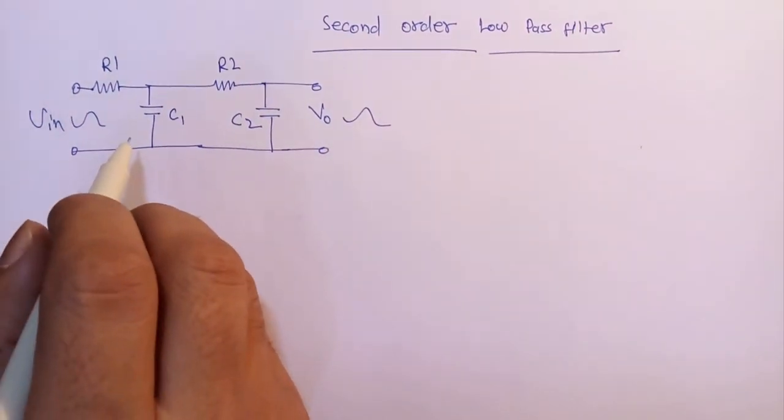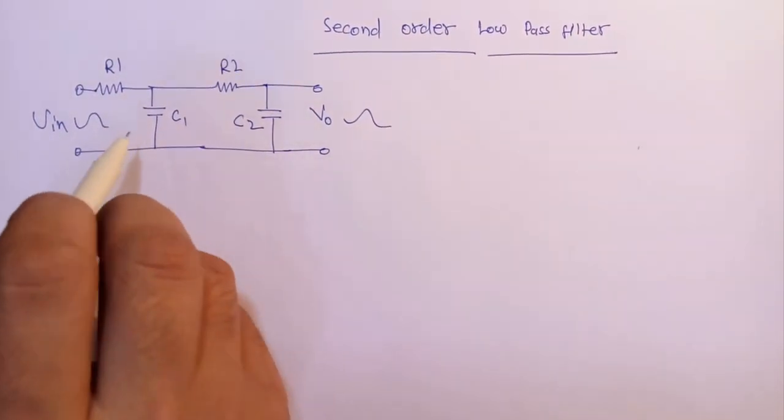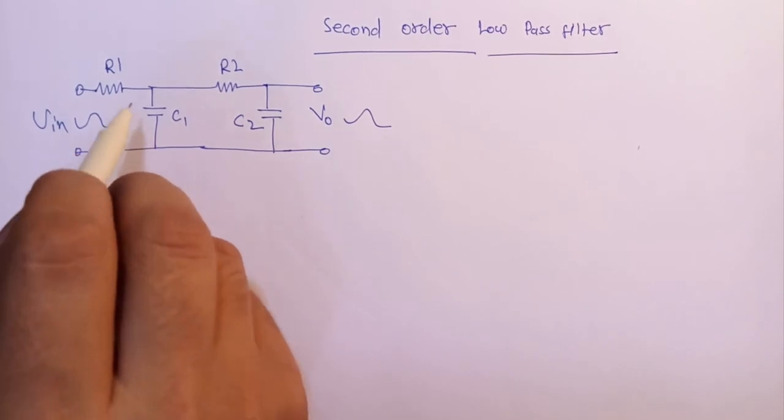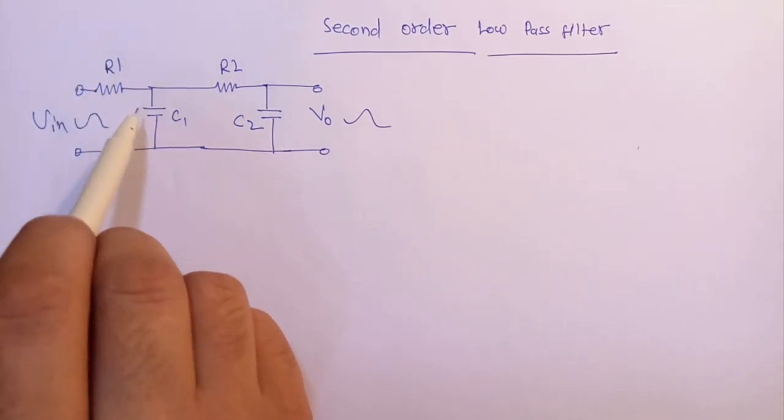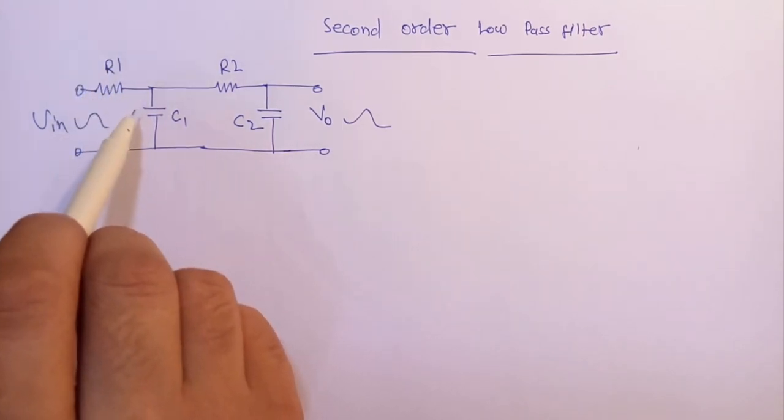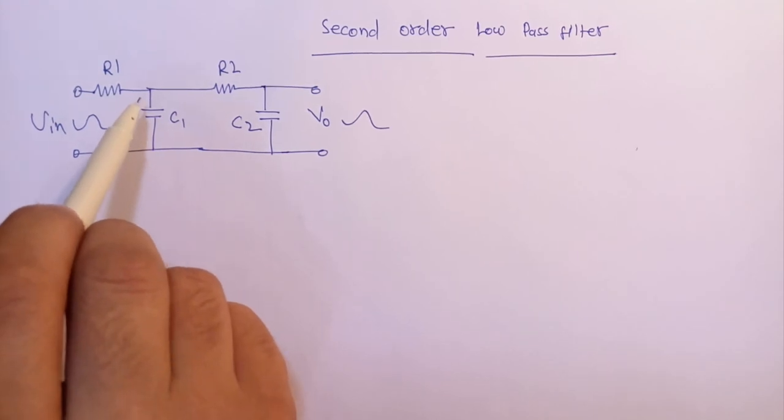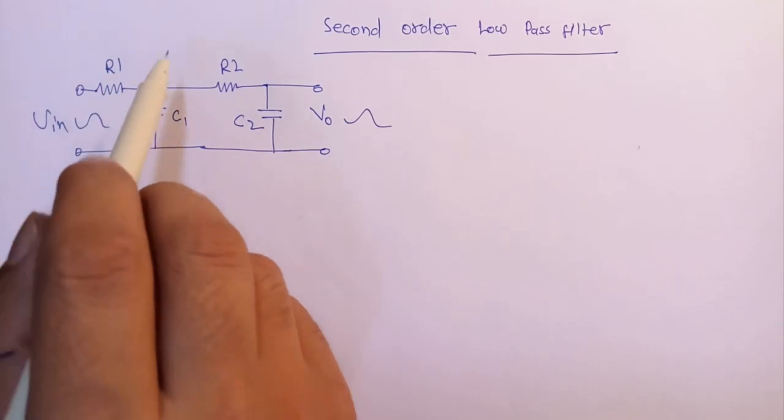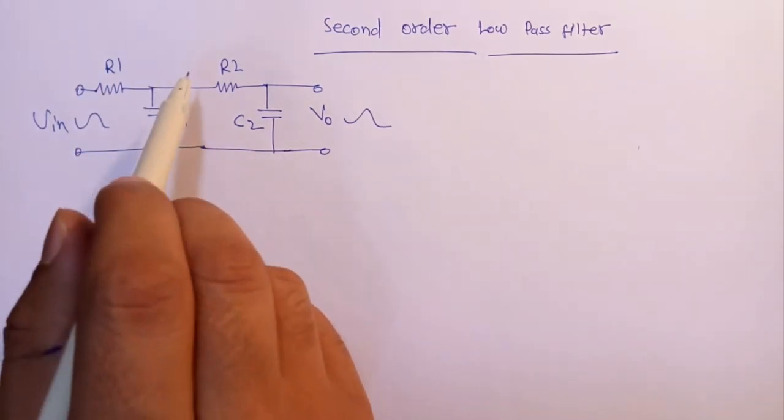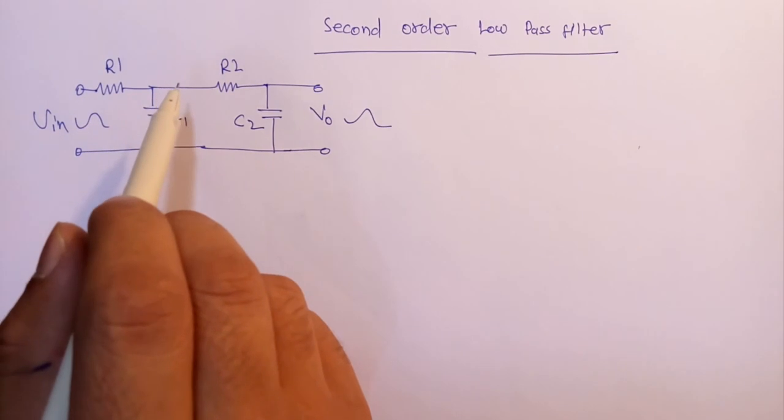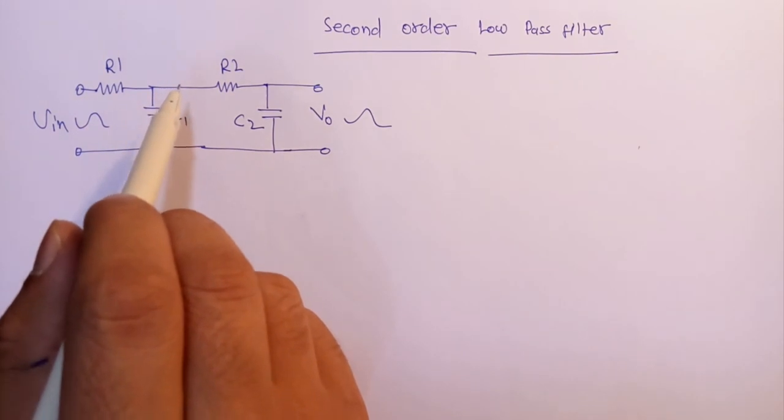So far we have seen that a simple first order RC low pass filter can be made by connecting a single resistor and capacitor in series. This single pole arrangement gives us a roll-off slope of -20 dB per decade attenuation of frequencies above the cutoff point of -3 dB.